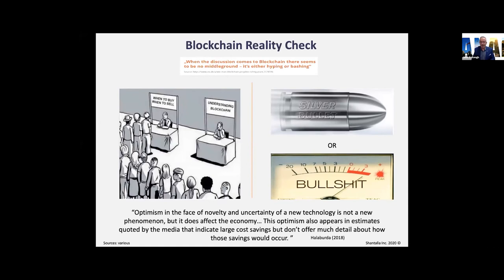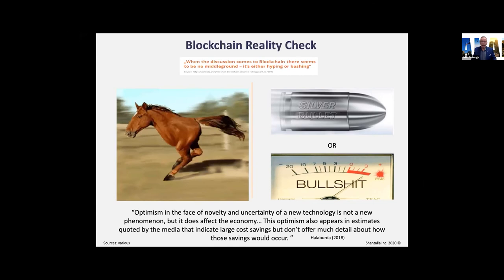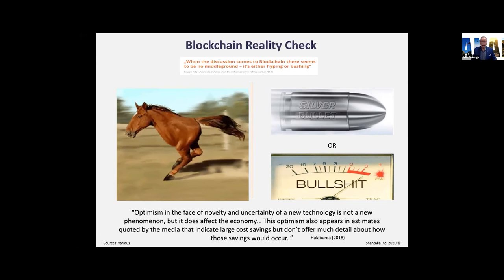As Hannah Halaburda — former chief economist at the Bank of Canada, now at NYU Stern Business School — says: optimism in the face of novelty and uncertainty of a new technology is not a new phenomenon, but it does affect the economy. This optimism appears in media estimates of large cost savings that don't explain how those savings will actually occur. It's on us as academics, researchers, and practitioners to show the use cases and prove the value of blockchain. Blockchain today has a head and an ass — we know where it's going and where it stops — but we still need to put more meat on the bone through more use cases.